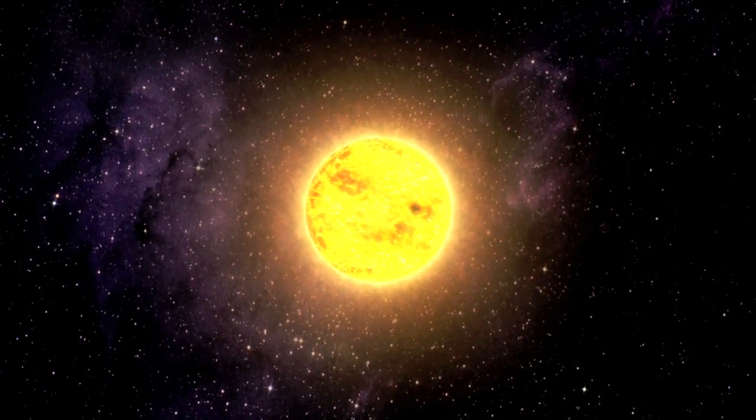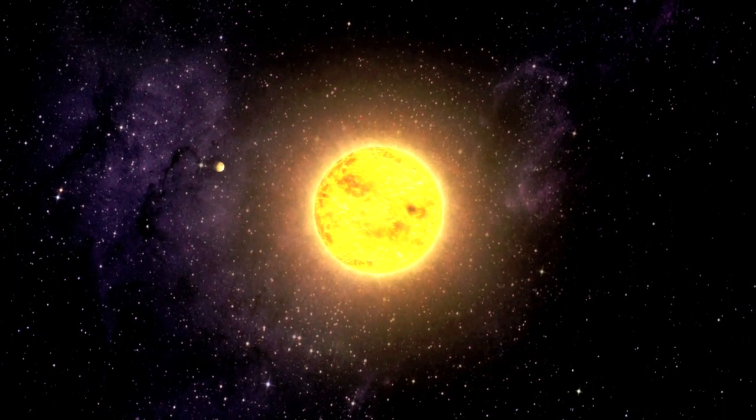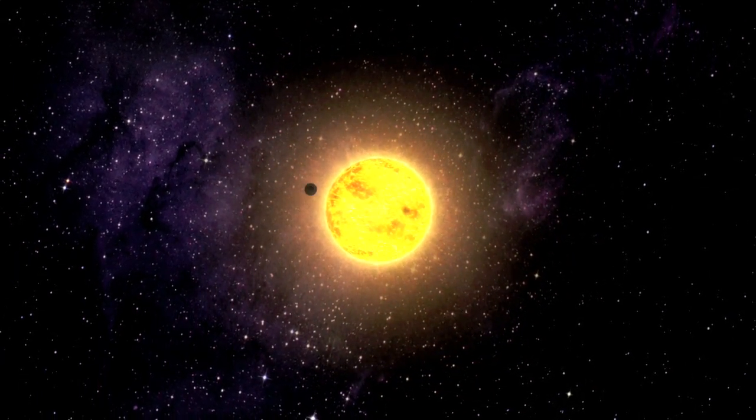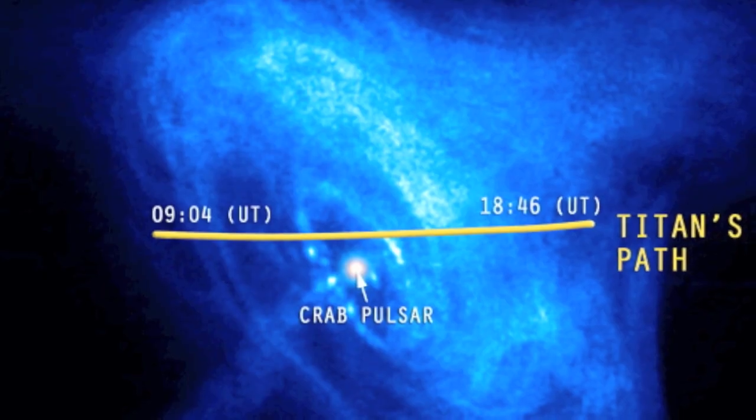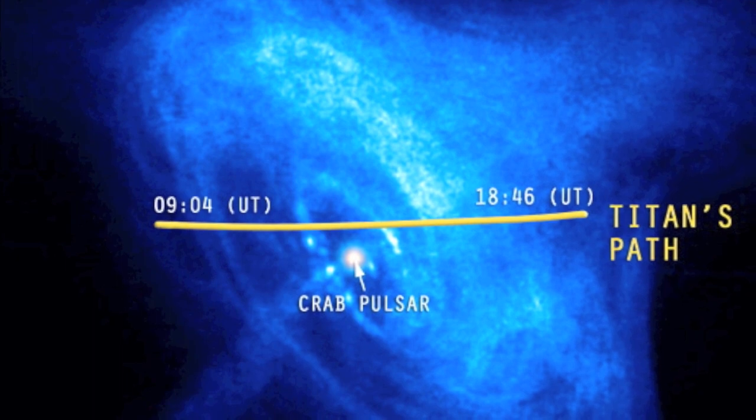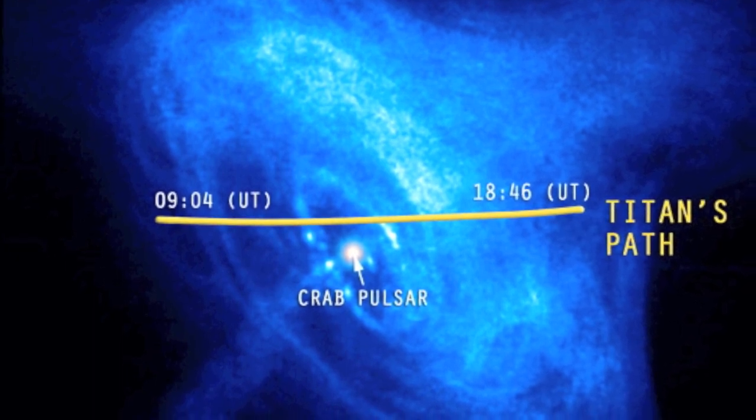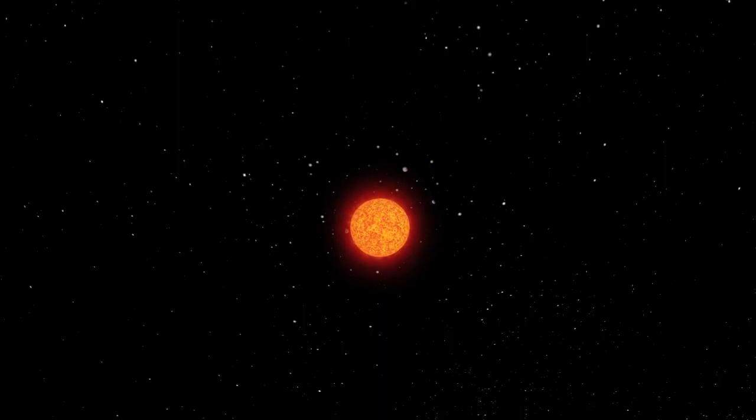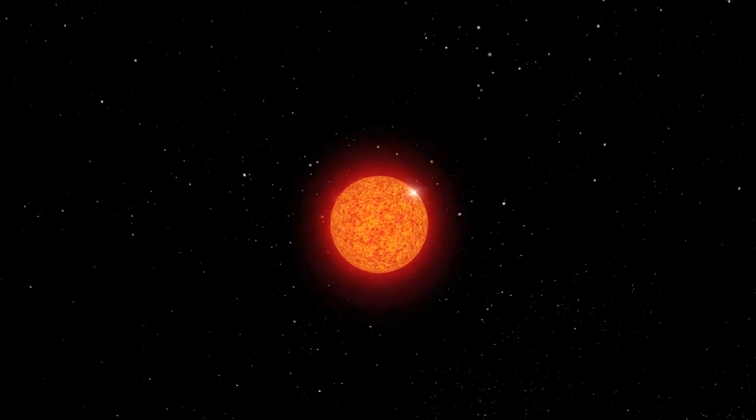A truly once in a millennium celestial alignment occurred on January 5, 2003 and it went largely unnoticed by the general public. On that date, Saturn's moon Titan passed directly between the Crab Nebula and the Earth, probably for the first time since the Crab Nebula was created in a spectacular explosion in the year 1054.